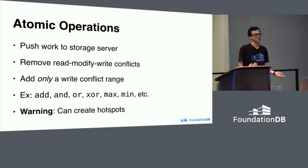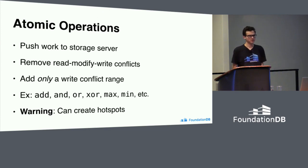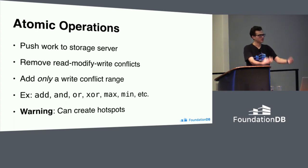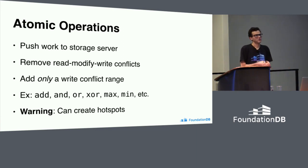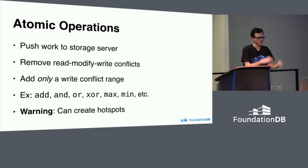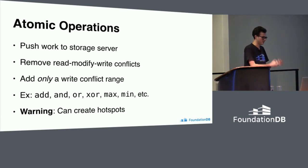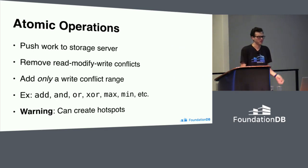Atomic operations are an API that FoundationDB exposes that allow you to push down work to a storage server. Typically, all atomic operations could be rewritten as the user requesting a key from the storage server, getting it back, modifying it, and writing it back — for example, reading a key, adding one to its value, and submitting a commit that overwrites it. The problem is if two people try this at once, one has to fail. With an atomic operation, you send a commit to the storage server that says "add one to the key, whatever it is," and you don't actually do the read — you let the storage server handle it. One warning: a particularly bad data model that reads a single key and updates it every transaction will serialize all operations without atomic ops. With atomic ops, you'll instead slam the storage servers responsible for that key, turning serialized operations into hotspots. They're not a panacea.